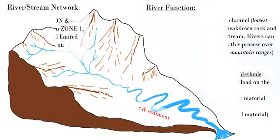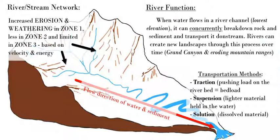Then there is transportation — the movement of material. Water can transport material through various means: it can push material along the riverbed, which is traction; bounce it along the riverbed in the water, which is called saltation; hold smaller, lighter, less dense material in suspension; and also carry material in solution, meaning dissolved.